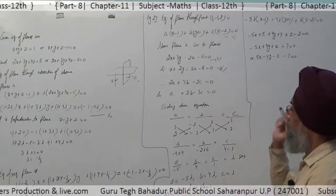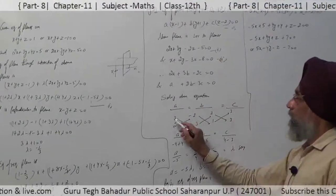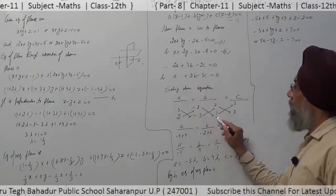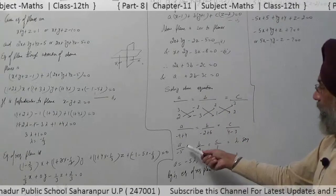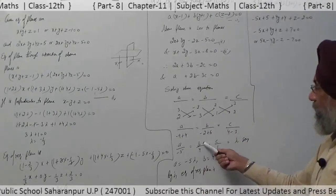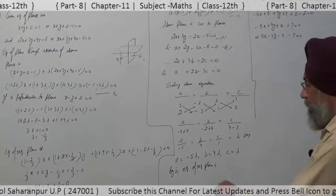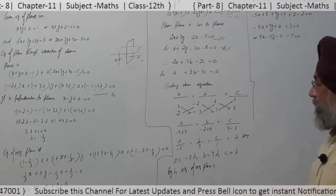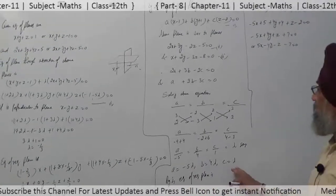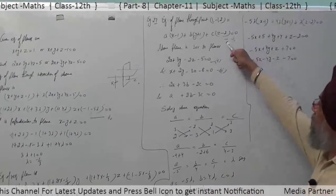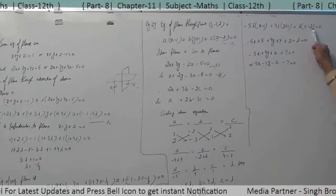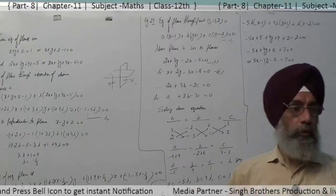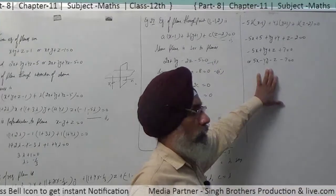Forming these two equations and solving using cross-multiplication with a, b, and c: the coefficients give us a/(-5) = b/4 = c/1 = λ, so a = -5λ, b = 4λ, c = λ. Placing these values into the first equation of the required plane, it becomes 5x - 4y - z - 7 = 0, which is the equation of the required plane.